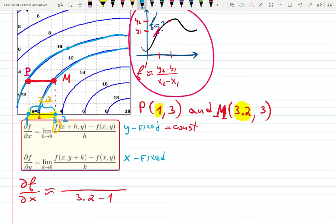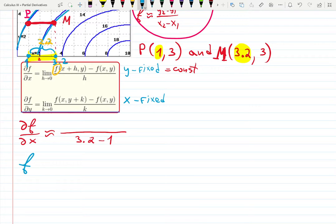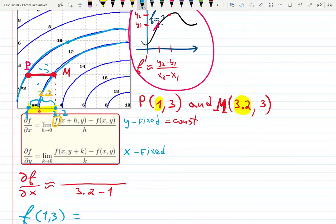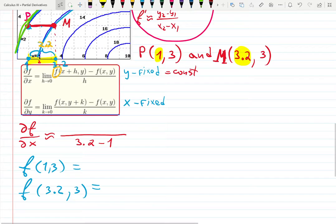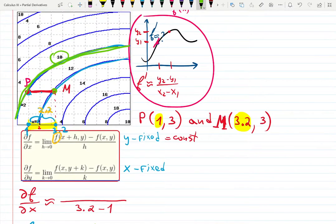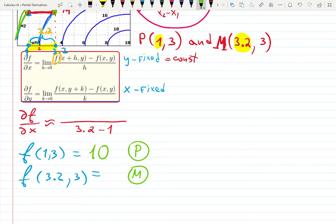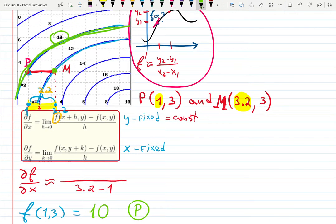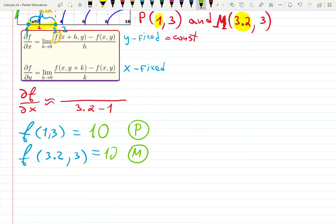What is F at 1, 3? And what is F at 3.2, 3? Are they approximate? If we would choose some random points, we would have to approximate them. But we were smart enough to choose clever points, and now we know the exact answer. At this point P, which curve are we using? Height 10. So original one is 10. Point M has the height 12, exactly. We always do next minus previous one. So it's going to be 12 minus 10.